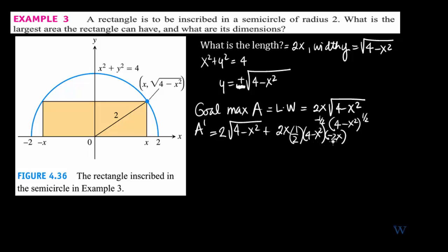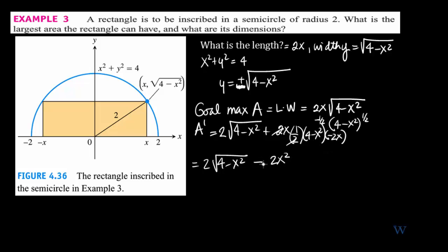The minus 2x comes from applying the chain rule to the inside function. After simplification, the 1/2 and 2x combine to give 2x², so we have 2 times the square root of 4 minus x² minus 2x squared, all divided by the square root of 4 minus x².